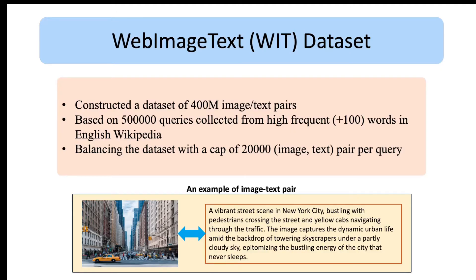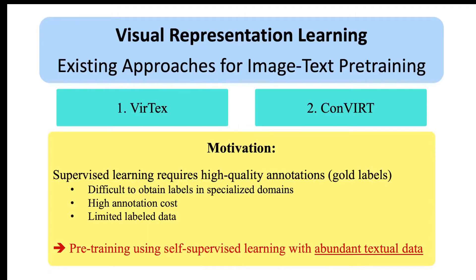As a result, they got image-text pairs like the example shown. Also, in order to balance the dataset, they included up to 20,000 pairs per query. Natural language supervision for image representation learning is not a new idea. CLIP is actually inspired by two models, VirTex and ConVIRT, that both share the same motivation. Since obtaining labeled data in specialized domains such as medical data is difficult and costly, they want to pre-train using natural language supervision with unlimited textual data.